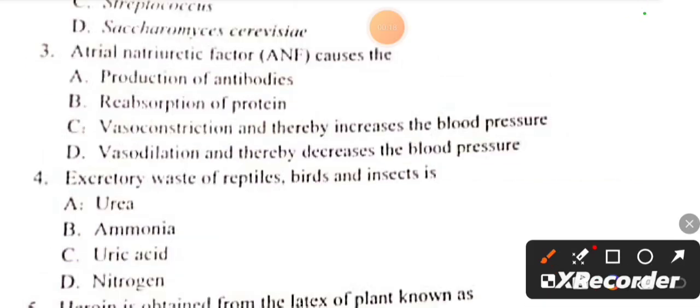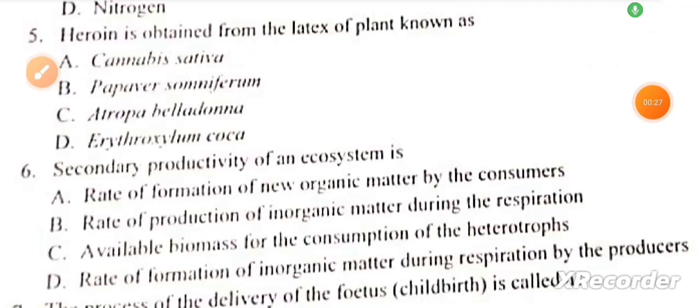ANF causes vasodilation and thereby decreases blood pressure. The excretory waste of reptiles, birds, and insects is uric acid. Question number five: Heroin is obtained from the latex of the plant known as Papaver somniferum.